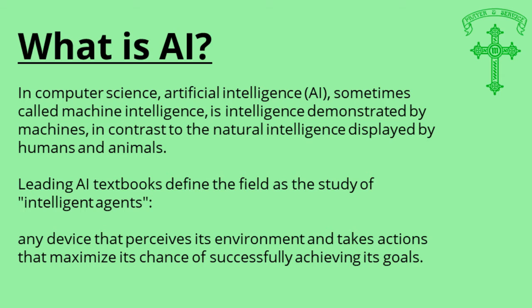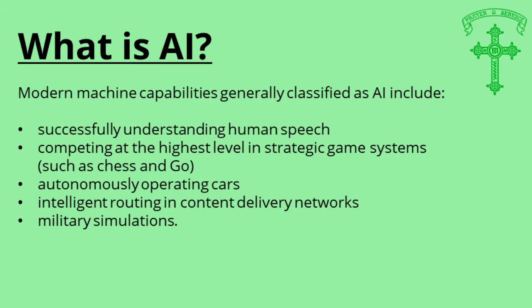I think the best example I can think of at the moment is automated cars. Modern machine capabilities generally classified as AI include successfully understanding human speech, competing at the highest level in strategic games such as chess. IBM have a computer called Watson that can beat all the grandmasters at chess — using its environment to maximize its chances of succeeding, which is to win.